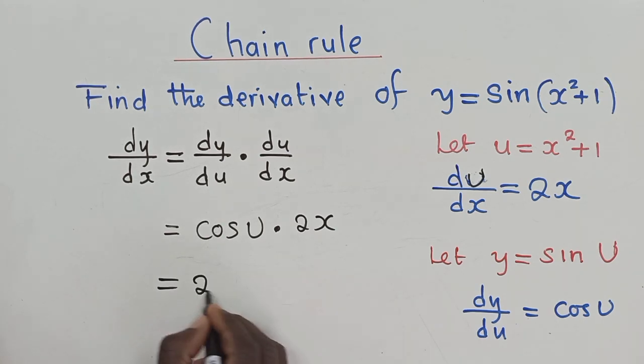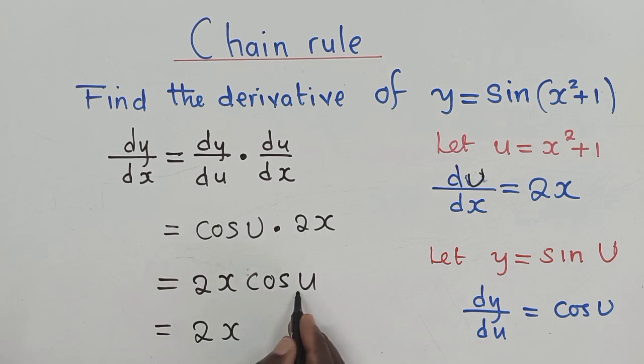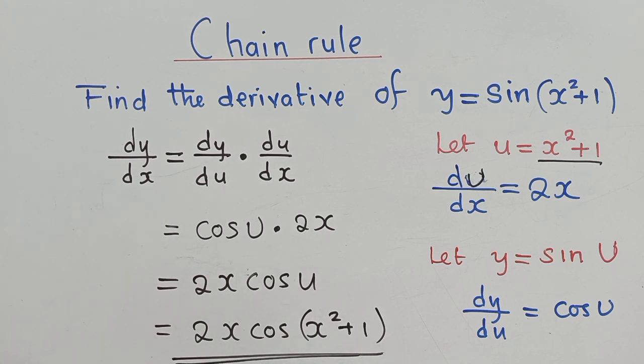So now you can arrange it nicely. So this, we can now bring back our u. What is our u? Well, our u is right here. So it's cos x squared plus one inside the brackets. So this is our solution.